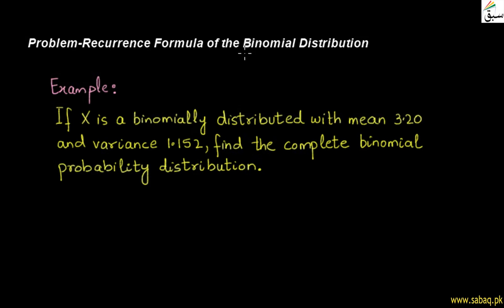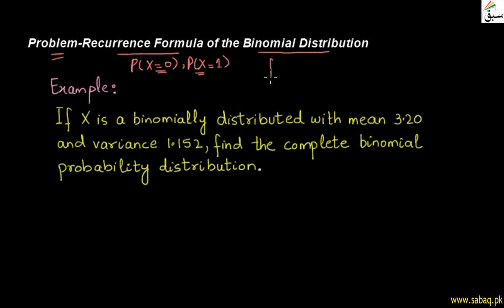Today's topic is the Recurrence Formula of the Binomial Distribution. We will take a problem. We studied in the previous video that the recurrence formula is basically a formula we use when we have the probability of x equal to 0 already computed, and we want to find the remaining probabilities easily. The distribution is a binomial distribution, which is a PDF of a specific form.